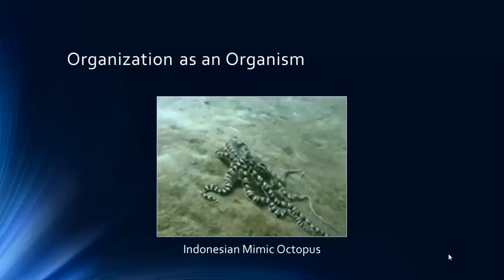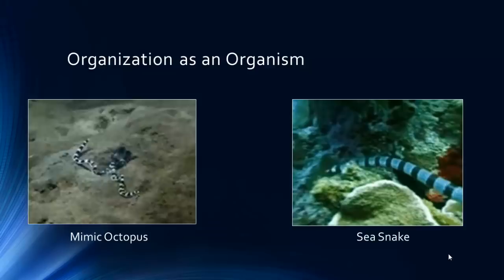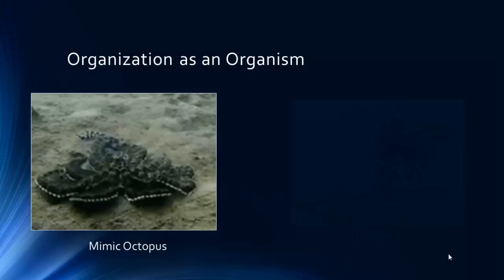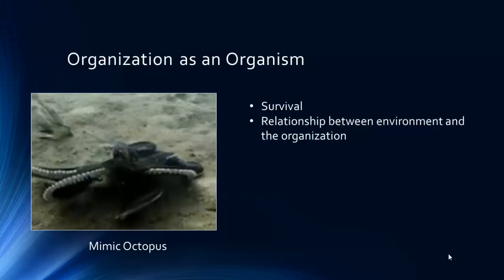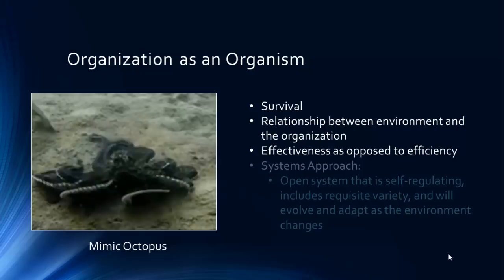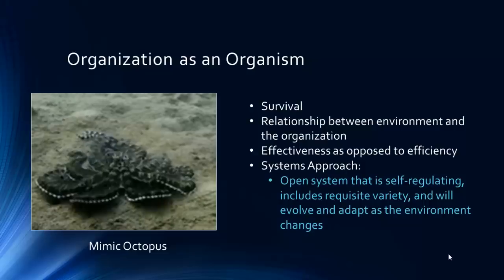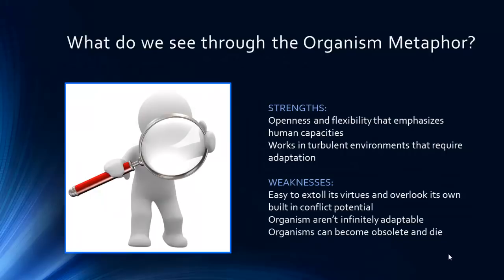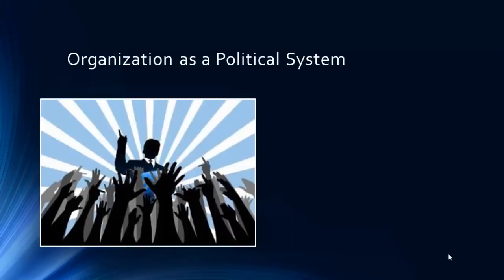The organization as an organism is a biological image with less preoccupation with orderliness than the machine and more attention given to adaptability and flexibility. This is an image of a mimic octopus — this octopus can assume the shape of other objects and organisms in its environment. When we look at an organization through the organism metaphor, we see how tasks and lines of authority can be changed in response to the environment. This metaphor considers survival, relationships between the environment and the organization, and effectiveness as opposed to efficiency. An open system that is self-regulating includes requisite variety and will evolve and adapt as the environment changes. Strengths are the openness and flexibility that emphasize human capacities, and it works in turbulent environments that require adaptation. However, organisms are not infinitely adaptable, but can become obsolete and die.